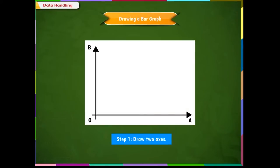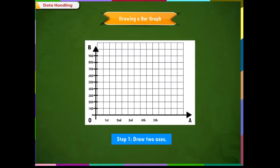Next step is to label these axes. We know that categories are represented on the horizontal axis and the values of the categories are represented on the vertical axis.